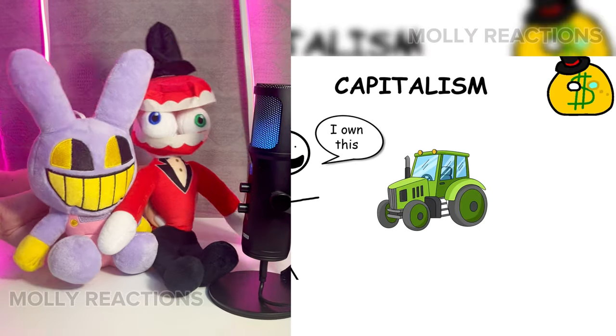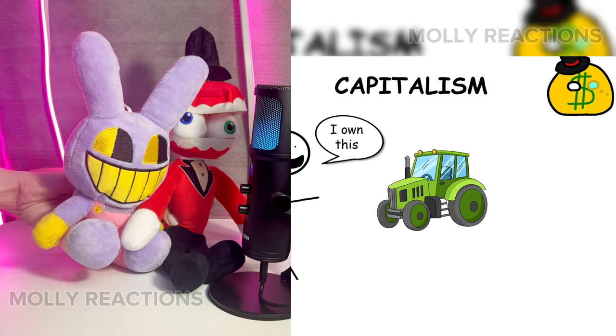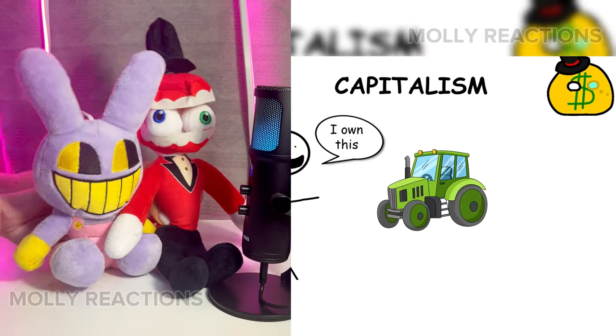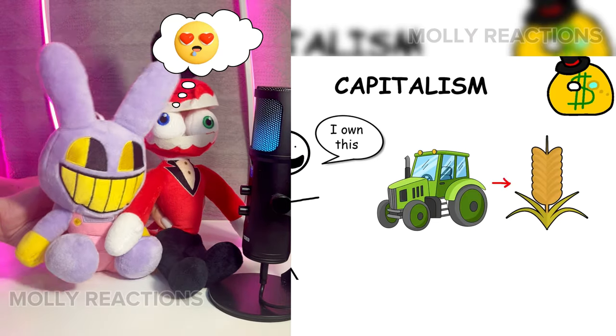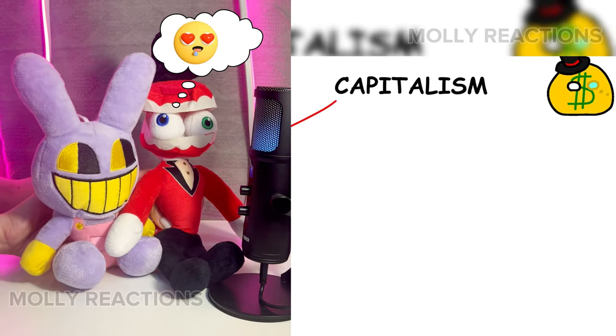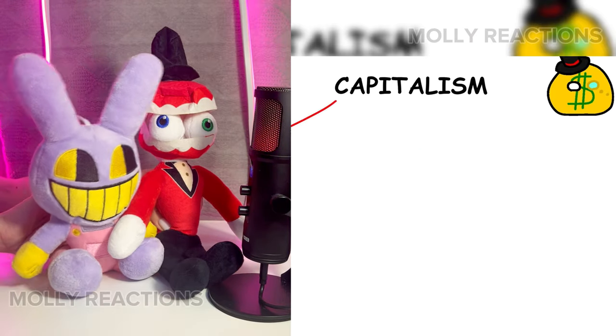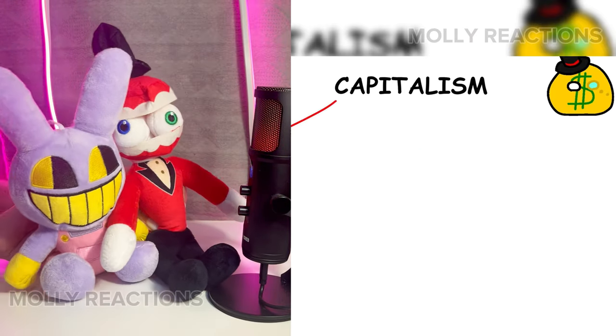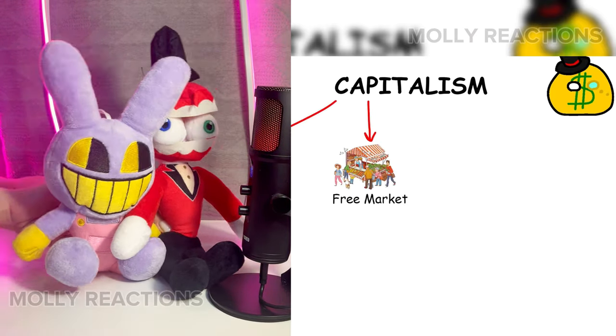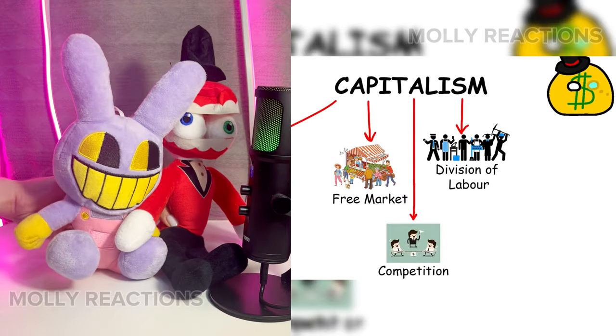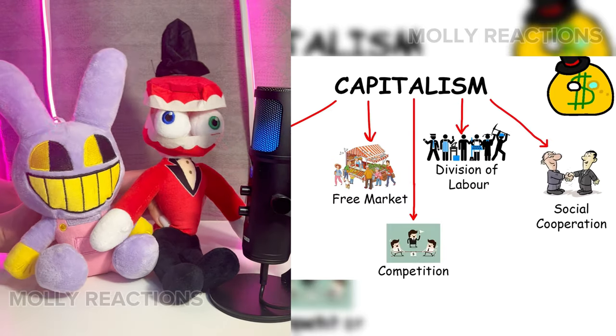Capitalism. Capitalism is an economic system based on the private ownership of the means of production and their operation for profit. The central characteristics of capitalism are private property, free exchange, competition, division of labor, and social cooperation.